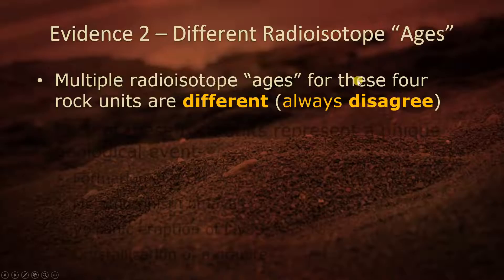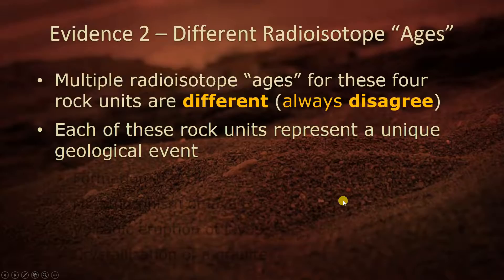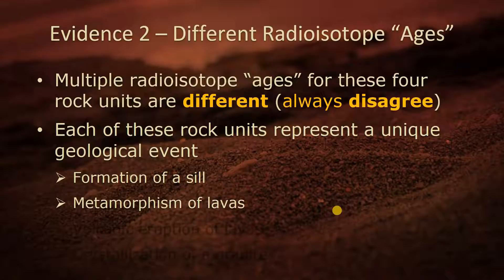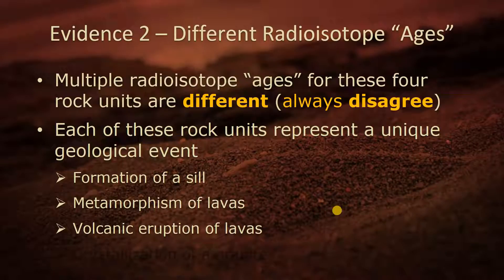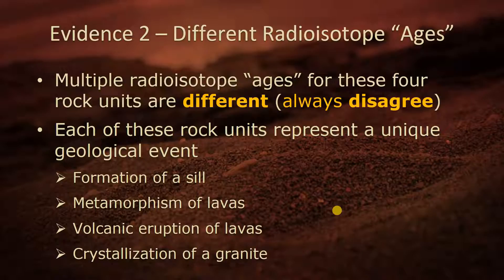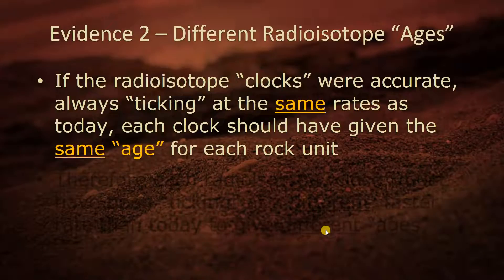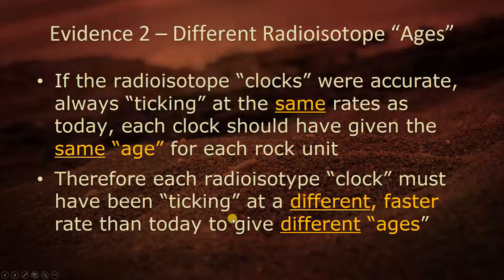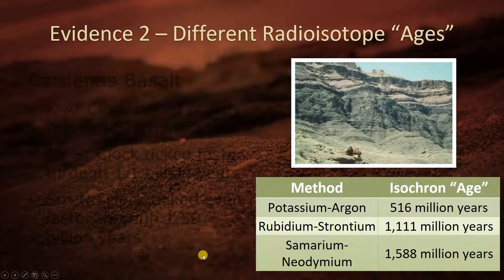Multiple radioisotope ages for these four rock units are different, and they always disagree. Each rock unit represents a unique geological event — formation of a sill, metamorphism of lavas, volcanic eruptions, or crystallization of granite. If the radioisotope clocks were accurate — always ticking at the same rates as today — each clock should have given the same age for each rock unit. Therefore, each radioisotope clock must have been ticking at a different, faster rate than today to give different ages.